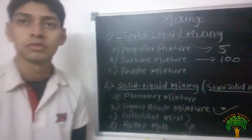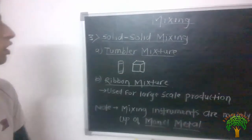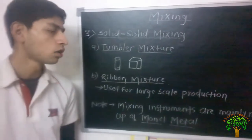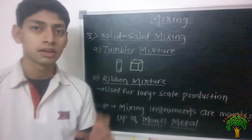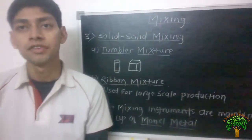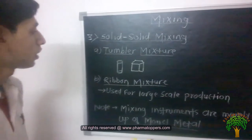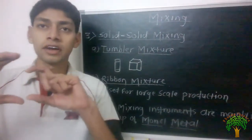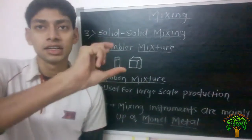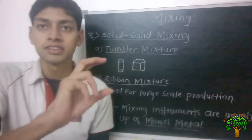Now we move towards solid-solid mixing. In solid-solid mixing we can mix by two ways: if we want to mix small quantity as well as if we will mix into the large quantity. In small quantity we can use tumbler mixture. In that we fill the powder and just tumbling this instrument and we can mix this powder.